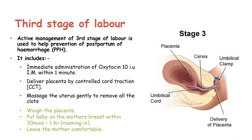In the third stage of labour, active management is needed to prevent any cases of postpartum haemorrhage. The active management of the third stage includes immediate administration of oxytocin 10 international units intramuscular injection within the first minute of delivery. We deliver the placenta through controlled cord traction. We massage the uterus gently to remove all clots, then we weigh the placenta. We put the baby to the mother's breast within 30 minutes to one hour, and then we leave the mother comfortable after delivery.